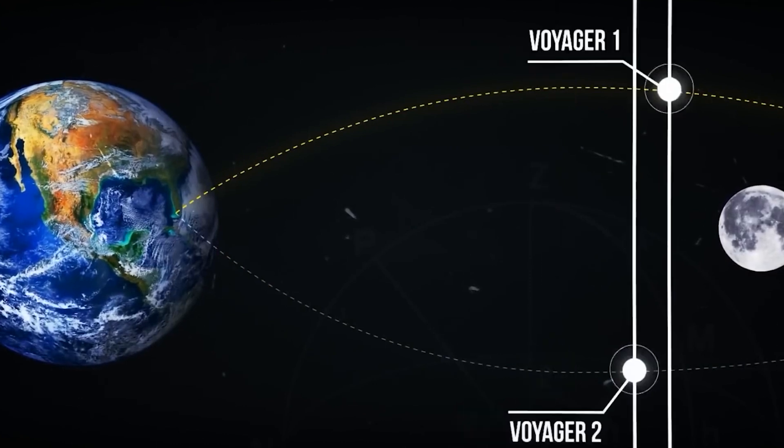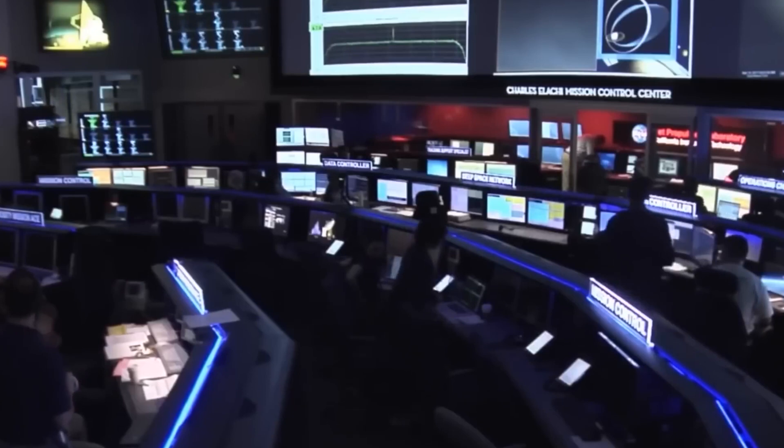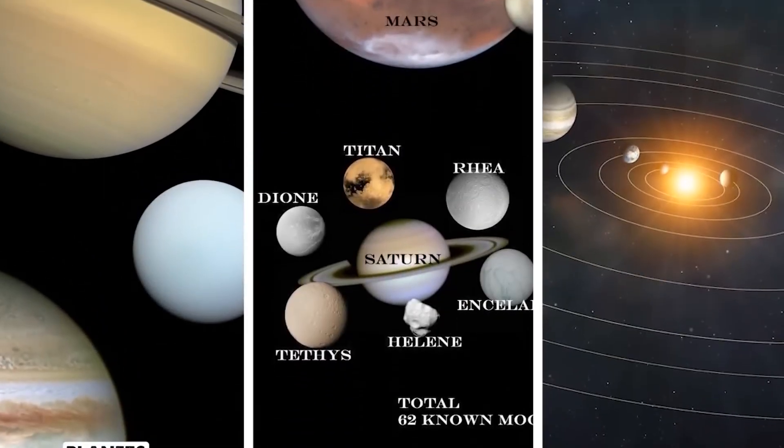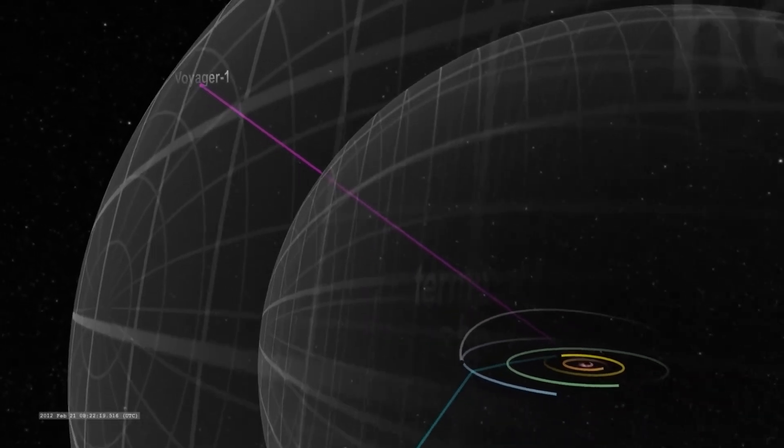In the summer of 1977, with the aim of taking advantage of this cosmic alignment, little did they know that these twin explorers would break all records in the history of space missions.